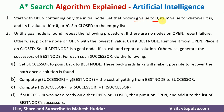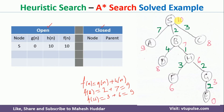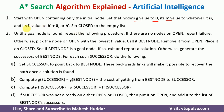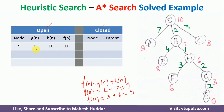We set g(S) = 0, and h'(S) is the heuristic value on top of that node, which is 10. Then we calculate f(S): g(n) = 0, h(n) = 10, so the total f value is 10. That is how we calculate the f value for node S.